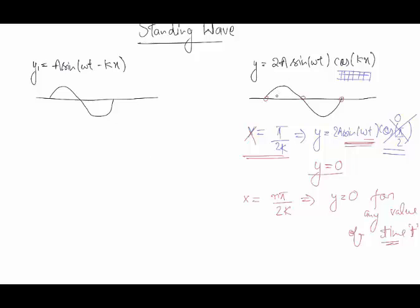So how does a standing wave behave differently from a normal wave? A normal wave, after a small moment of time, will look shifted to you. A normal wave moves in the forward or backward direction. So a normal wave will move forward in a small time — in the next moment it appears shifted further, and then further again. This is how its propagation appears — moving forward.